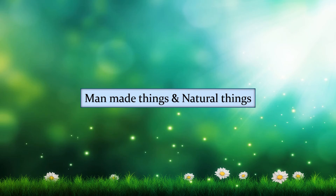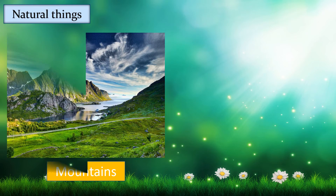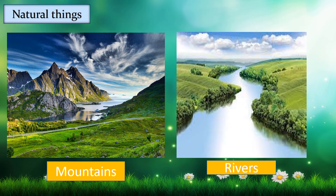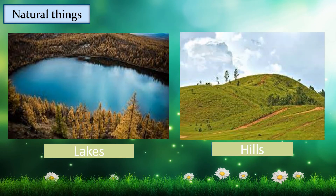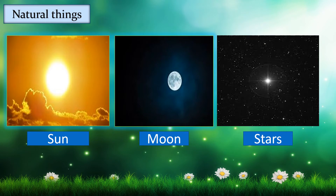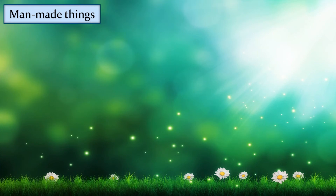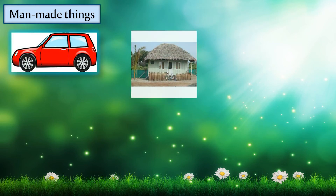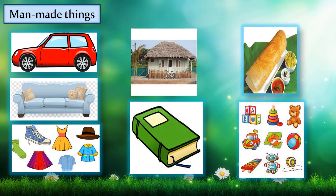We will see about man-made things and natural things. Natural things are gifted by nature — made by God — like mountains, rivers, lakes, hills, sun, moon and stars. Man-made things are made by man. For example, car, house, sofa, book, toys, clothes and food items.